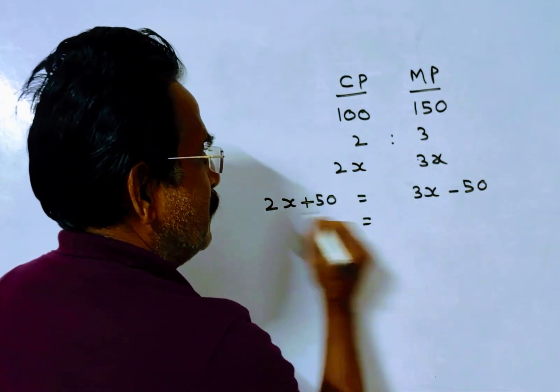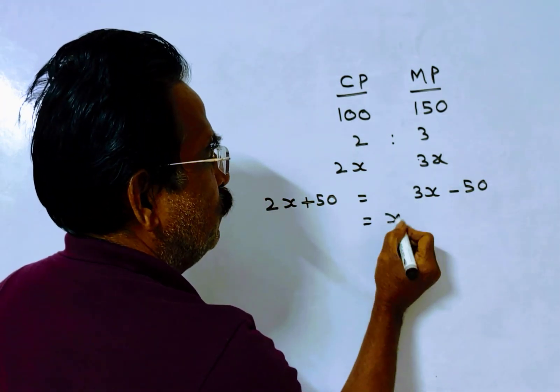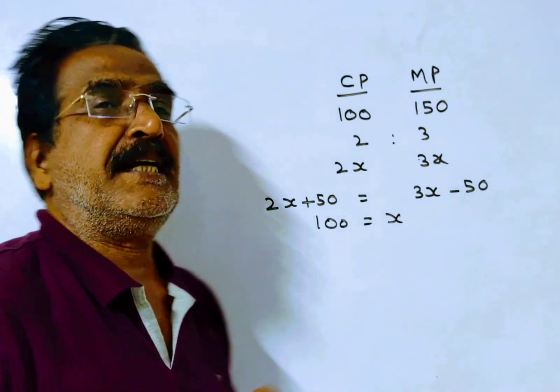So 3x minus 2x equals x, which equals 100. X is equal to 100.